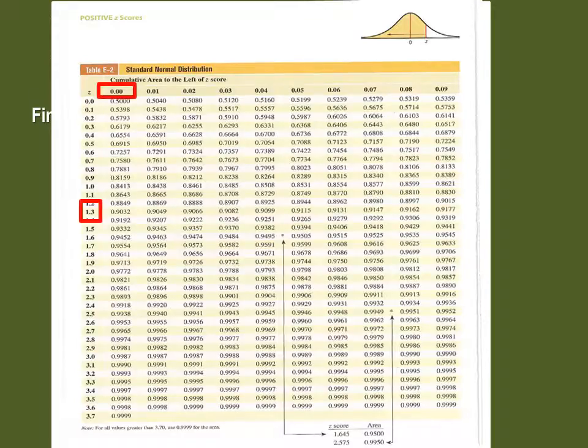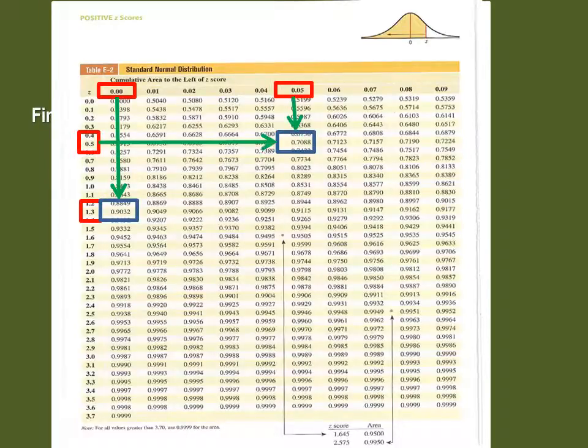So for Z-score 1.30, the area is 0.9032. And for Z-score 0.55, the area is 0.7088.